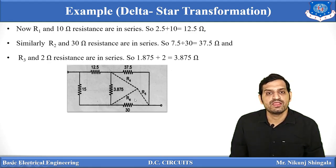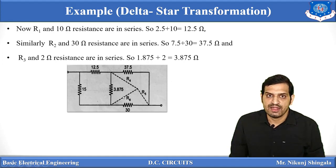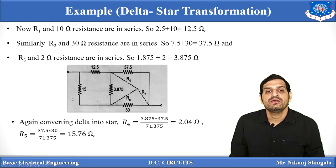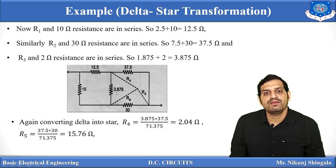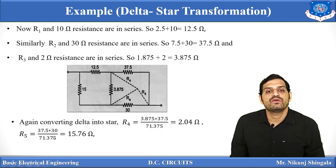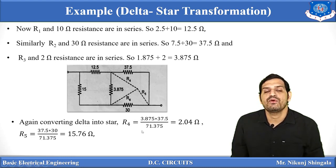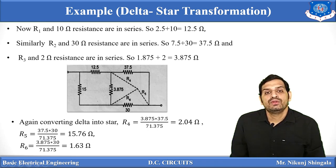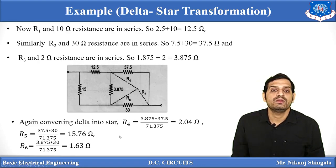In the new network, another delta is visible. Converting this second delta to star gives R4, R5, R6: R4 = (37.5 × 3.875)/(37.5 + 3.875 + 30) = 145.3/71.375 = 2.04 Ω. R5 = (30 × 37.5)/71.375 = 15.76 Ω. R6 = (3.875 × 30)/71.375 = 1.63 Ω.